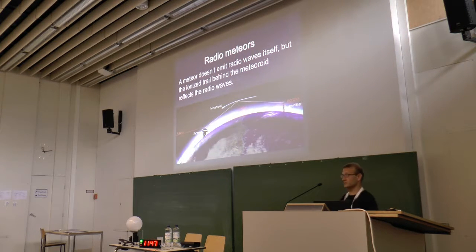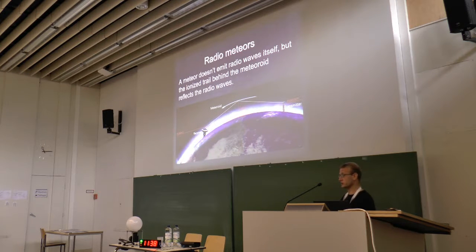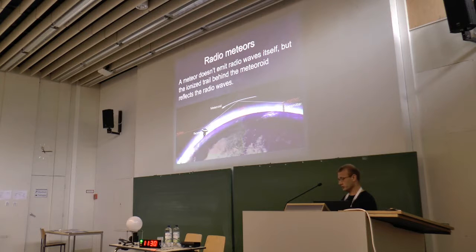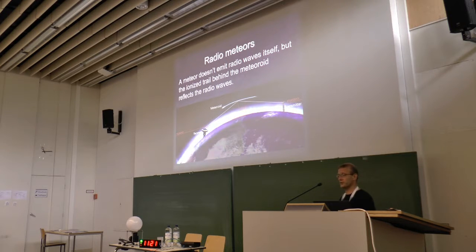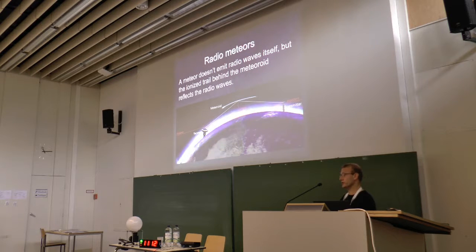I think everybody has already seen a meteor. If you are standing outside during nighttime, especially during a meteor shower, you see from time to time the flash of light — this is called a meteor. Meteors emit light, but they are barely emitting radio waves themselves. What they do is create an ionized trail in the atmosphere, and radio waves reflect off this ionized trail. That's the principle on which we are working.